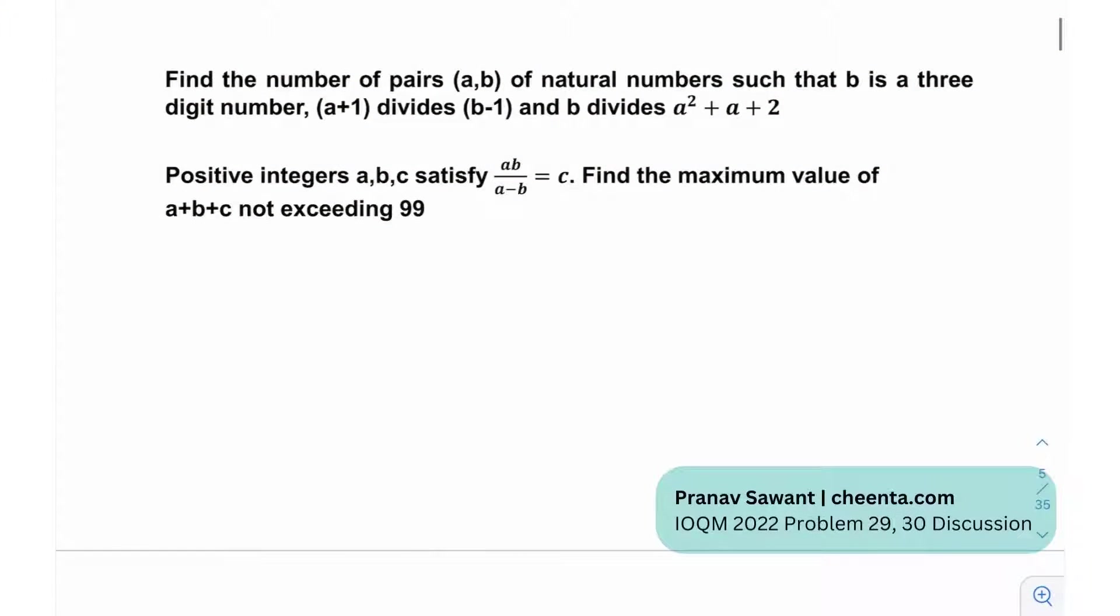Let's begin. Let me just label this as question number 1 and question number 2. I believe this was problem number 29. These are the last two problems essentially. If I try to target the first problem, what are they saying? They are saying find the number of pairs (a,b) of natural numbers such that b is a three digit number, (a+1) divides (b-1), and b divides a² + a + 2.